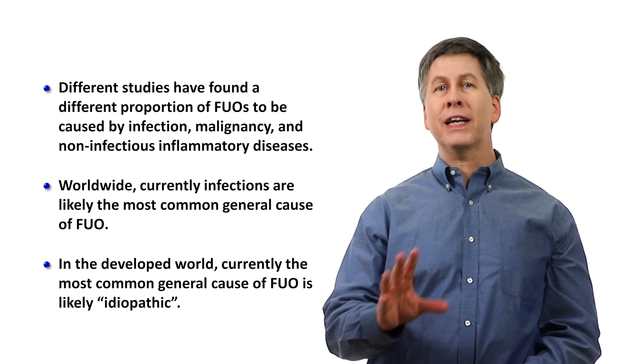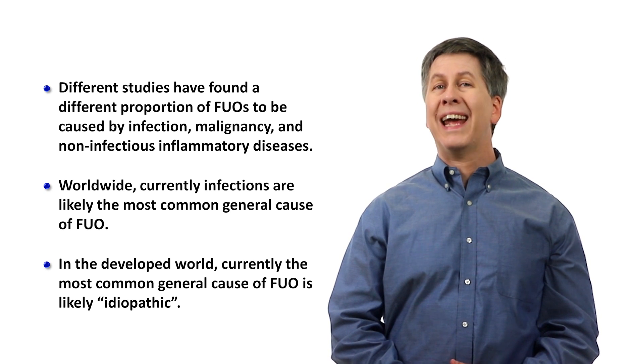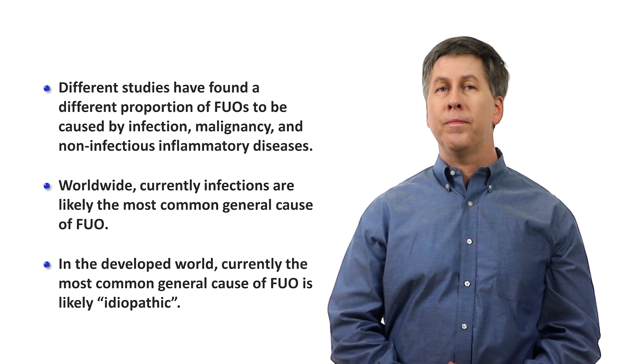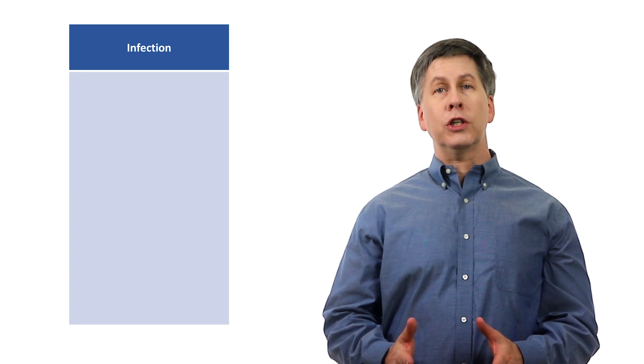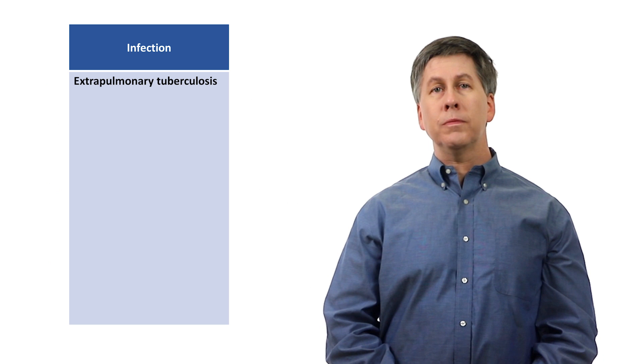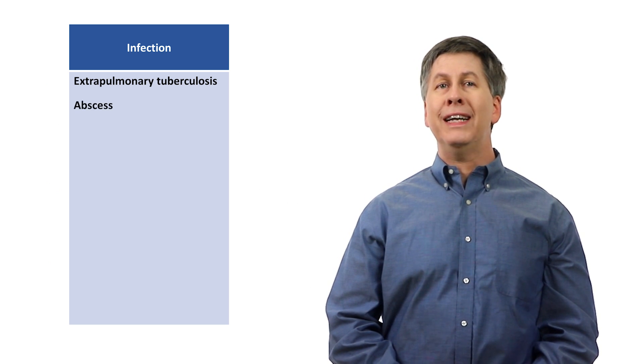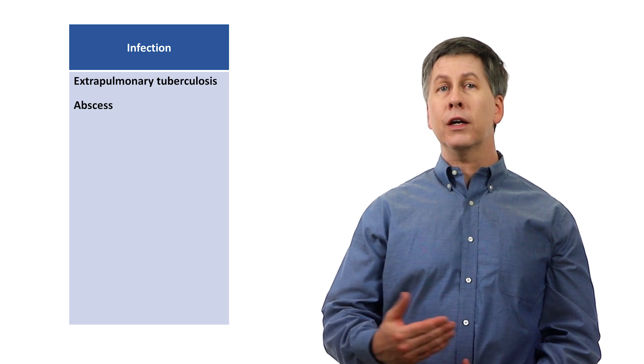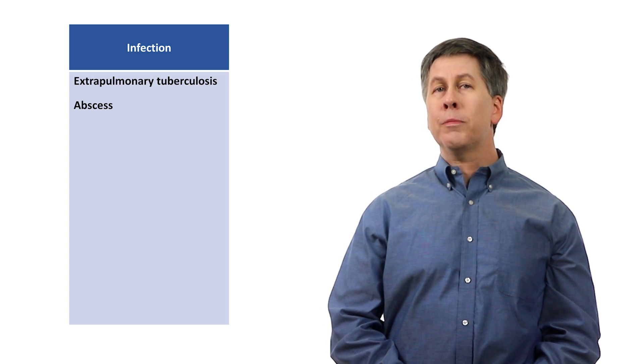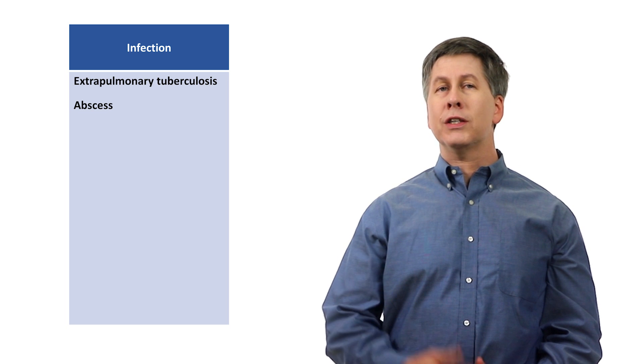Now, let me go through some notable specific examples of diseases which can present as FUO. Infections include extrapulmonary tuberculosis. Abscesses, although most abscesses in general are intra-abdominal or intra-pelvic, these are usually evident on abdominal imaging, particularly on CT.